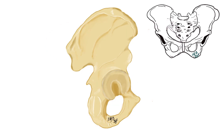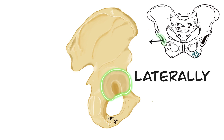Before we start, we have to determine the orientation of os coxa. I will give you three important landmarks that can help you determine whether it's a right or left os coxa. The first one: there is a cup-like pit called the acetabulum, which faces laterally.